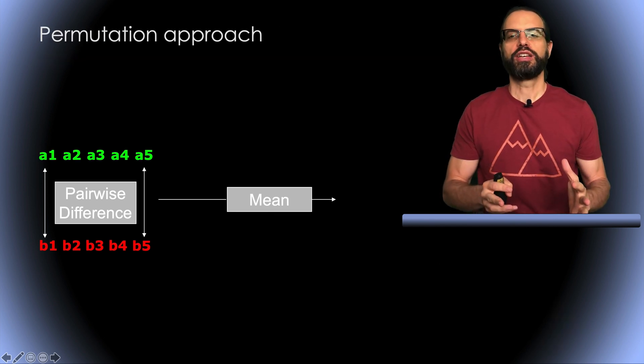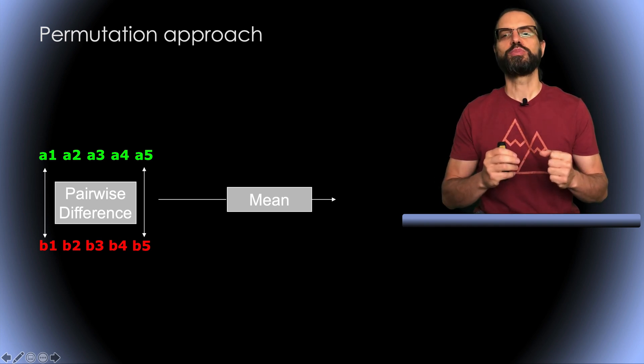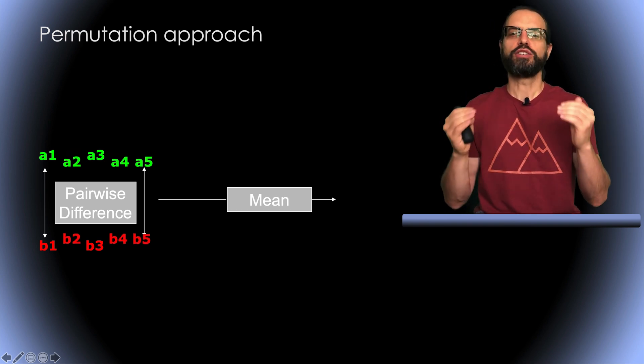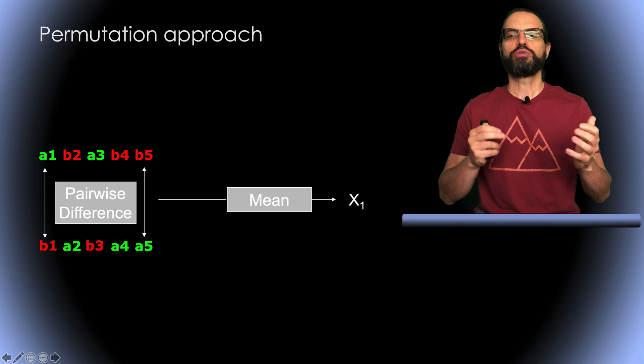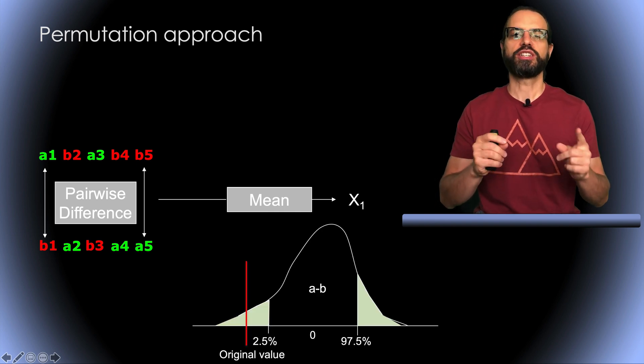What about permutation? For permutation, under the null hypothesis, again, there should be no difference between conditions A and B, so we can randomly permute some of the values. So here is one random permutation, for example. For each pair, there is a 50% chance of switching conditions.